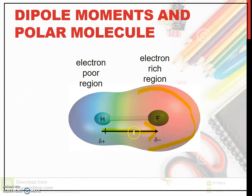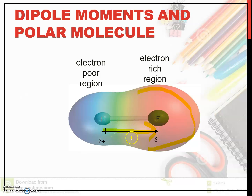Hydrogen is partially positive. When this happens, it forms a dipole. This is a polar bond and makes the molecule polar.